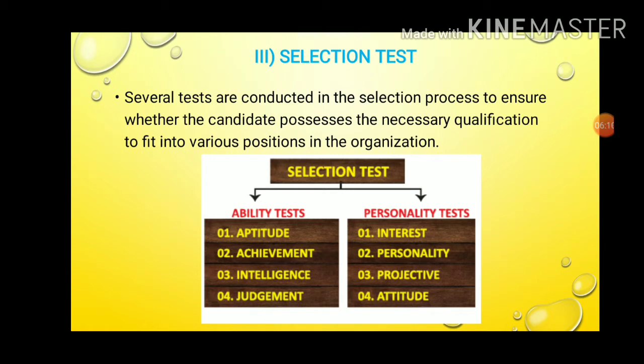The selection test is classified into two categories: ability test and personality test. Under ability tests, we have aptitude, achievement, intelligence, and judgment. Under personality tests, we have interest, personality, projective, and attitude.